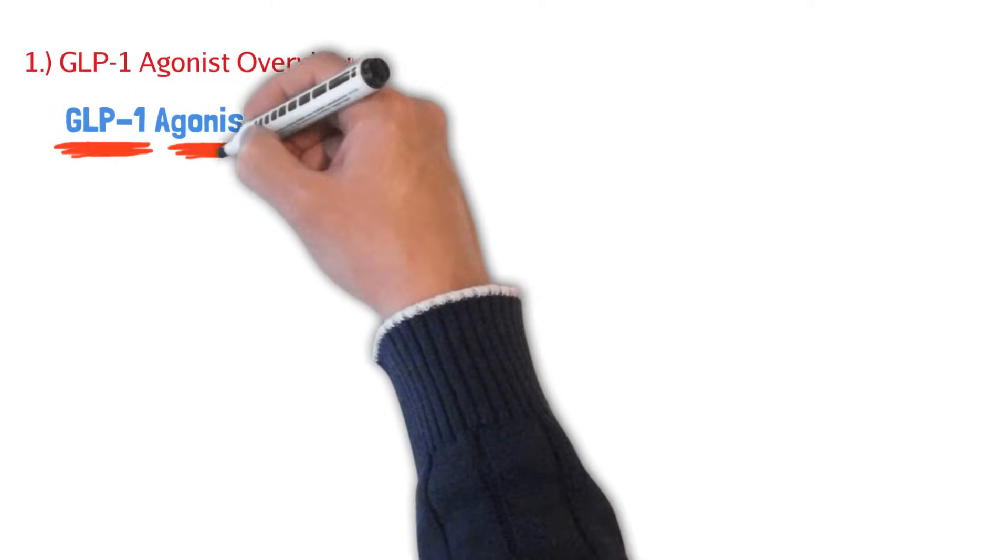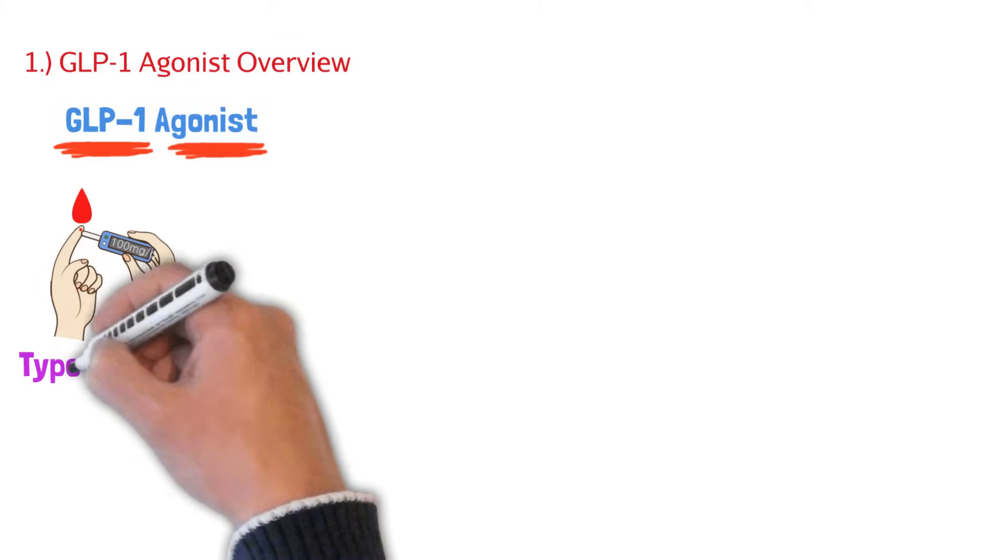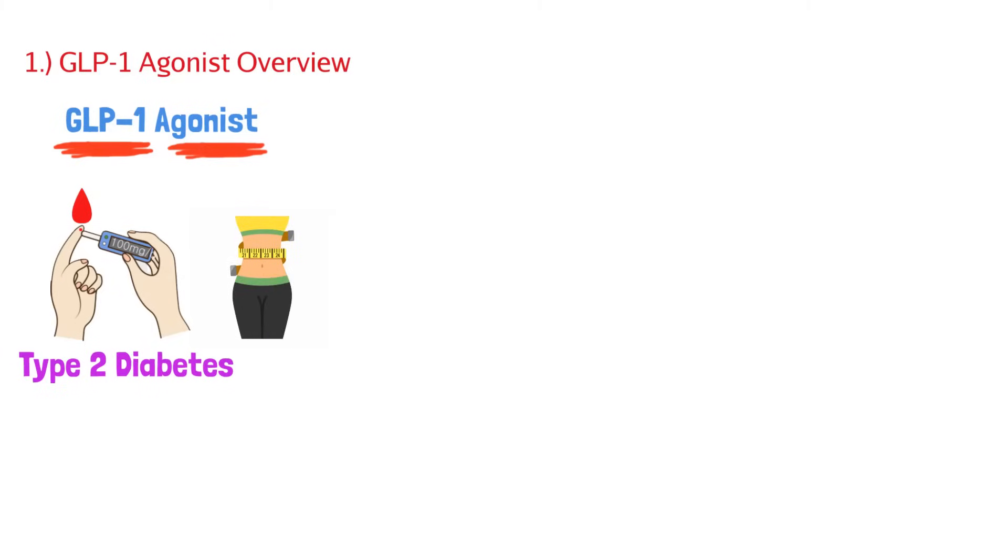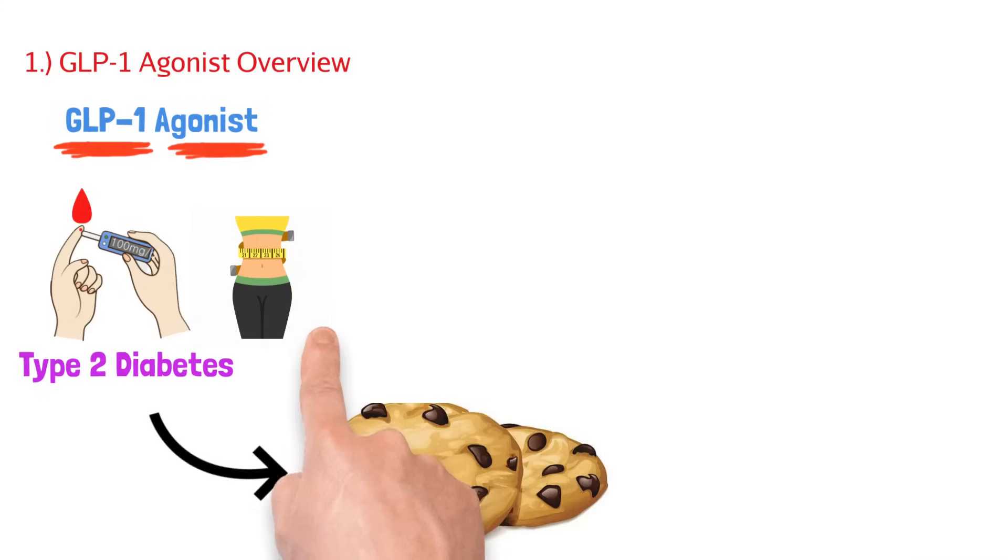Agonists mean they activate or they cause the effect. Here we have a drug that causes the effect of GLP-1. These drugs are primarily used in type 2 diabetes and they can also be used in weight loss. Anytime we talk about diabetes, we know our goal is to lower blood glucose levels, to lower that sugar level in your blood.